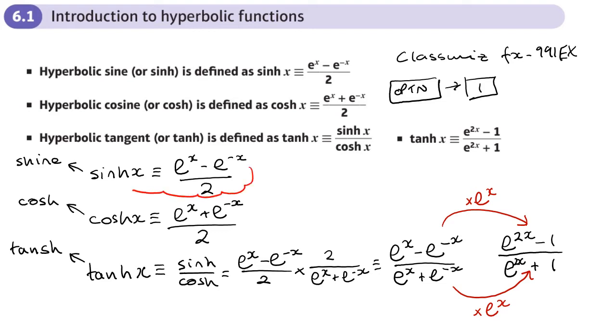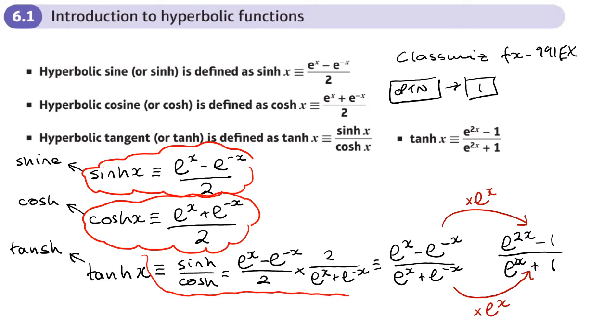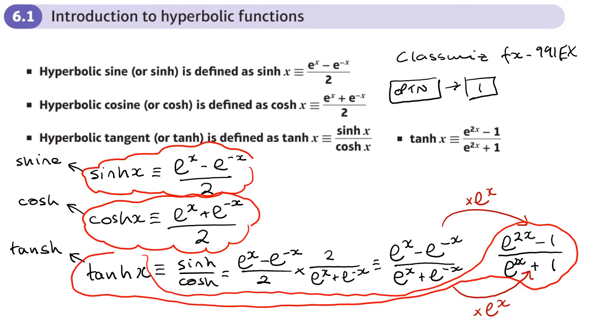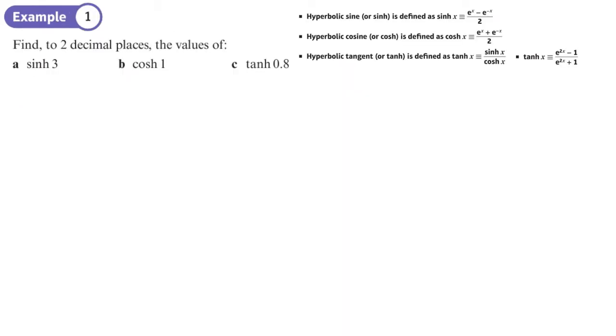There are three hyperbolic functions: shine, cosh, and tanh. Now, find to two decimal places the values of these. This can be done on our calculator by pressing option and choosing 1 for the hyperbolic functions. But we're going to use the definitions — the formulas. So sinh(3) means putting 3 into the formula: e to the 3 minus e to the minus 3, over 2. Using the hyperbolic function button gives 10.02 to two decimal places, and using the formula gives exactly the same answer.